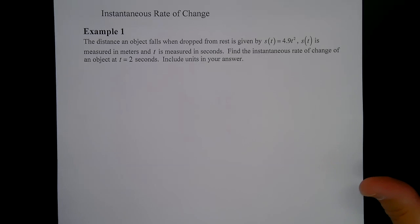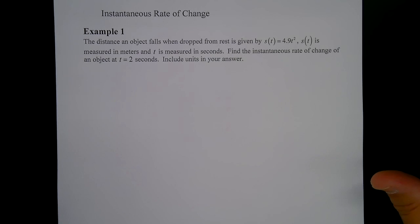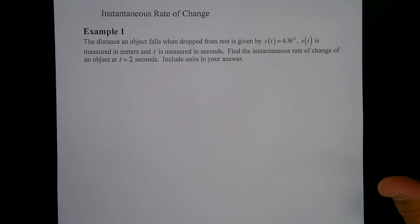Today we're going to be talking about instantaneous rate of change. If you recall from two lessons ago, I talked about this when we talked about average rate of change. Instantaneous rate of change is the slope at one point, and from Friday's lesson we know that we can only achieve that by taking a limit.